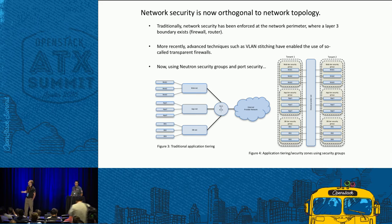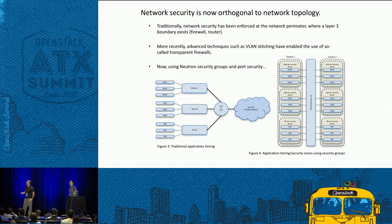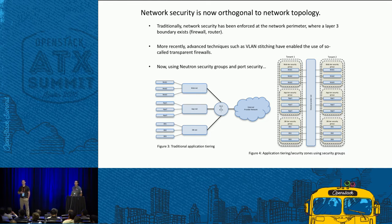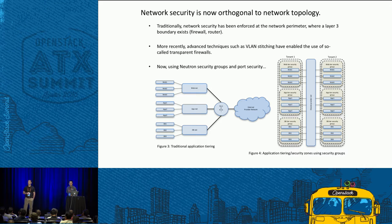The title of this slide could be controversial: network security is decoupled from network topology with the constructs OpenStack provides. This statement needs to be true for shared provider networks to be a viable alternative to tenant networks. For decades, the way to implement network security was to force traffic through Layer 3 boundaries, because filtering could only be applied at a router or firewall. More recently, techniques like VLAN stitching allowed filtering without Layer 3 boundaries, but with some flexibility challenges.